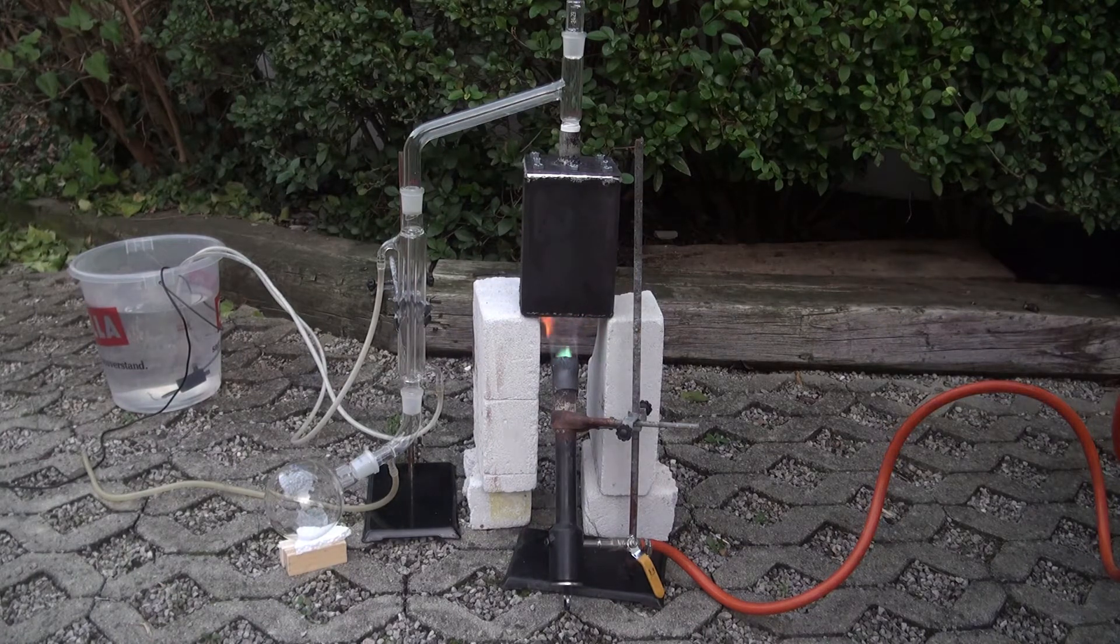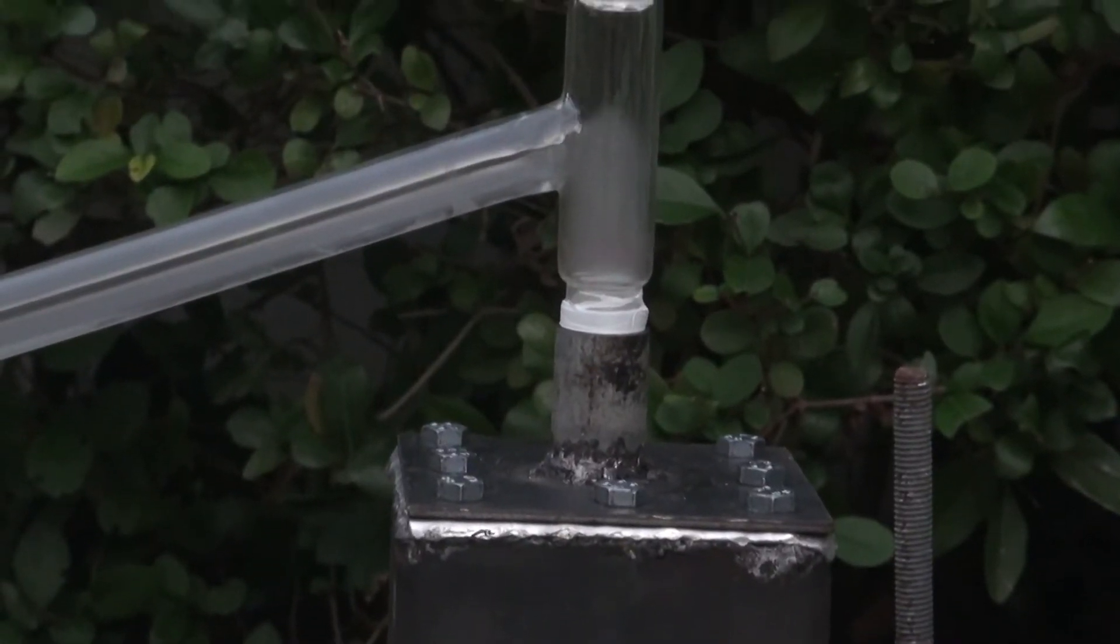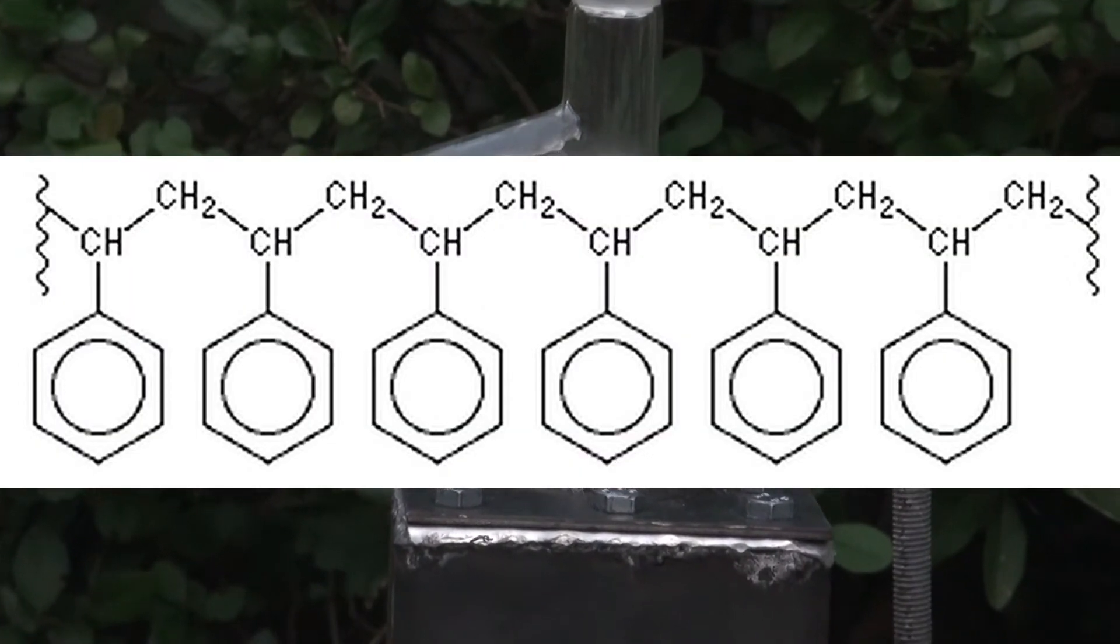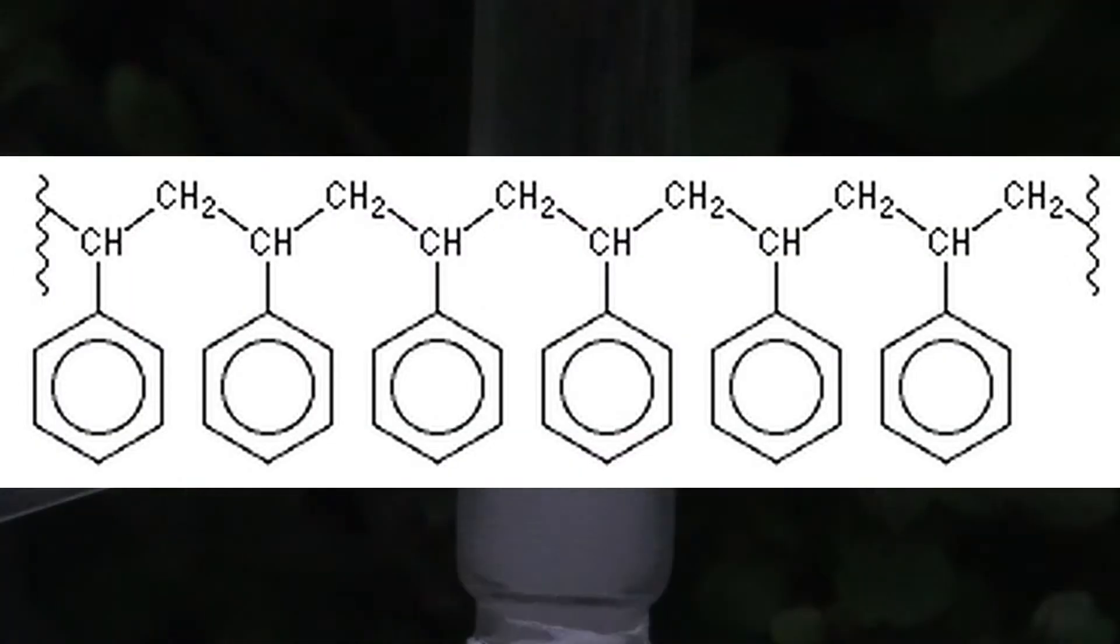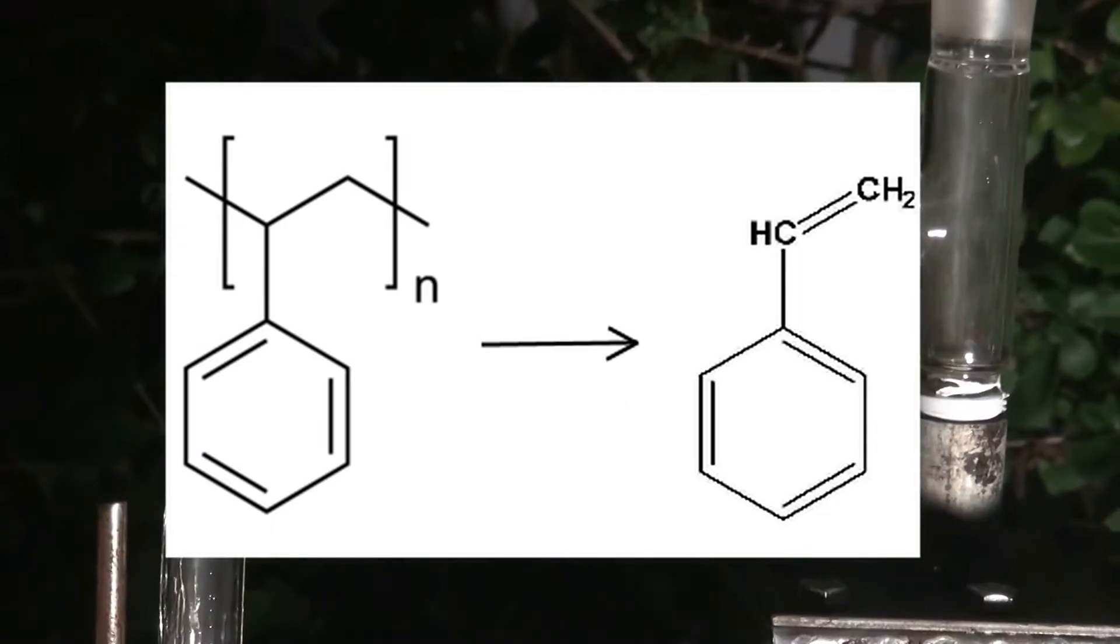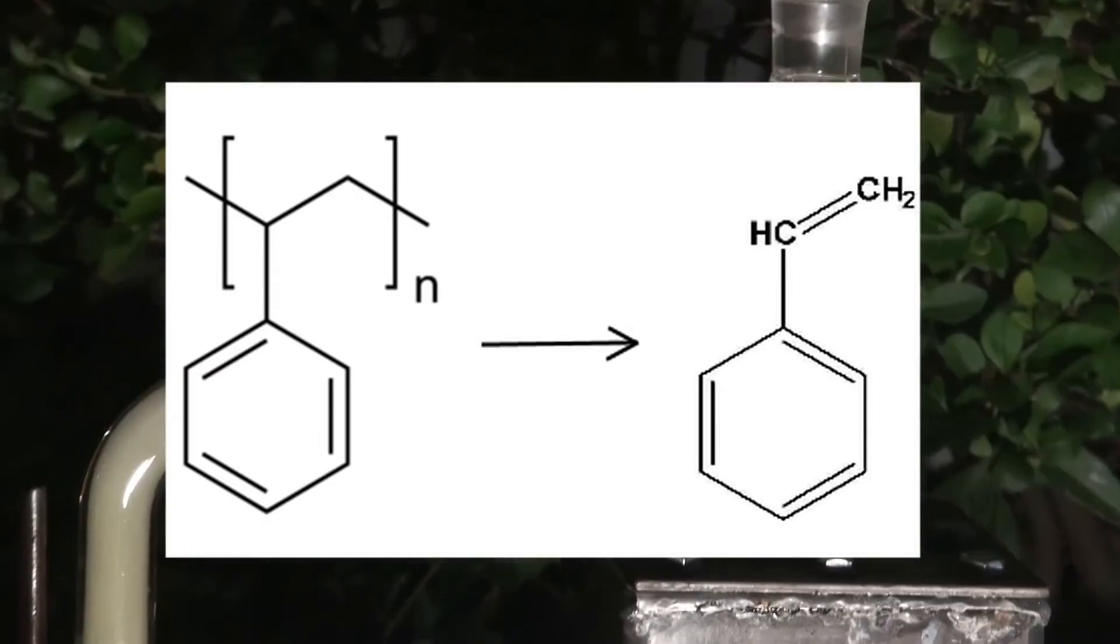Now, what and why are we doing this here? Polystyrene is not a simple molecule. It consists of a nearly never-ending chain that consists of single links. I can split these links using heat. Theoretically, it should just form styrene.